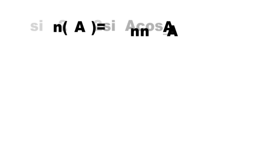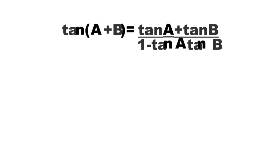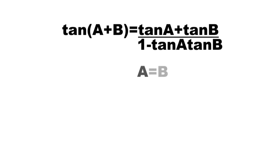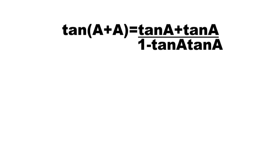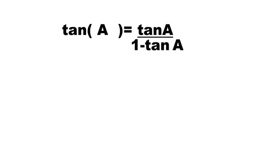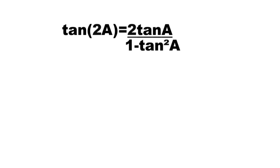From the sum of two angles identity, tangent(a + b) = (tangent(a) + tangent(b)) / (1 - tangent(a)tangent(b)). But if a is equal to b, then tangent(a + a) = (tangent(a) + tangent(a)) / (1 - tangent(a)tangent(a)). Simplifying, tangent(2a) = 2tangent(a) / (1 - tan²a).